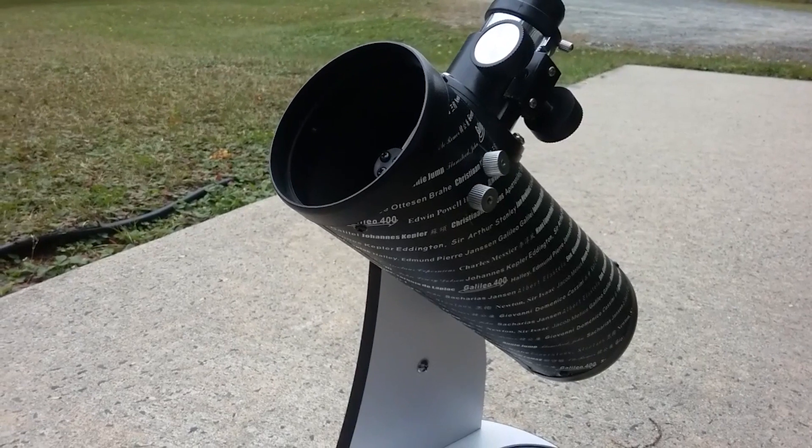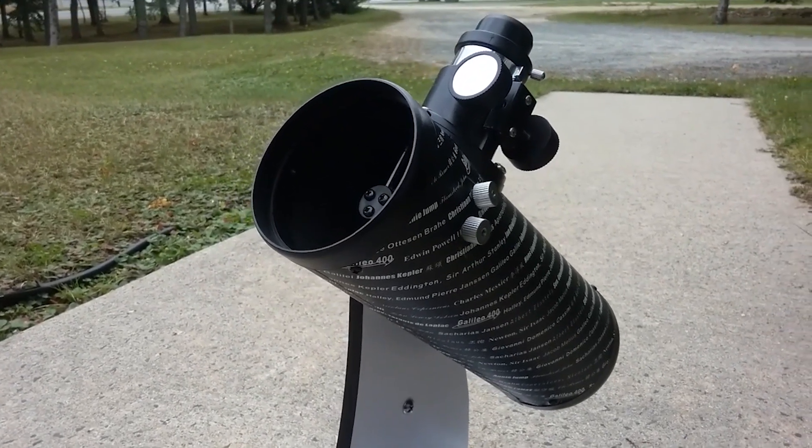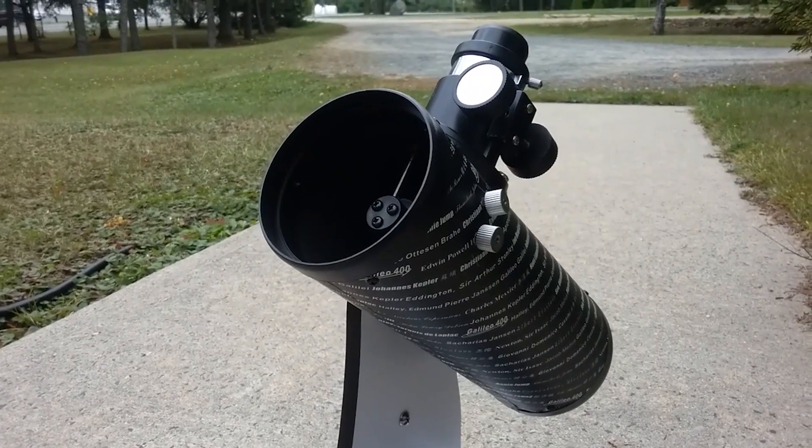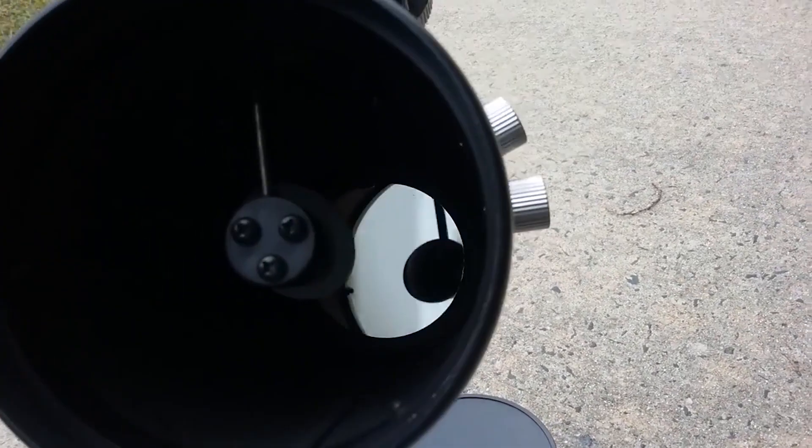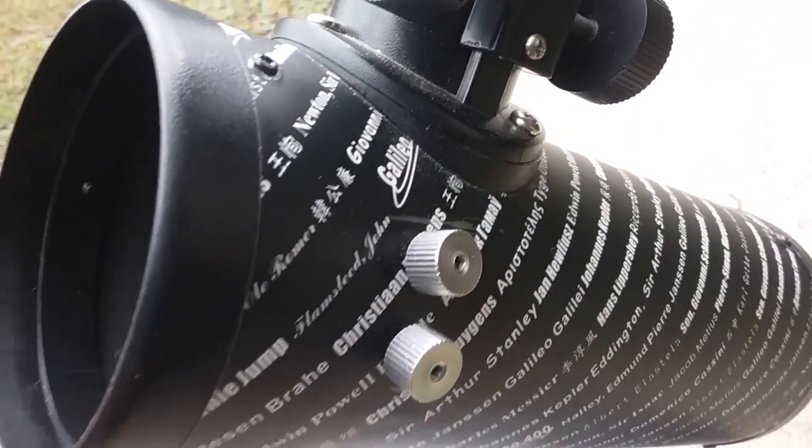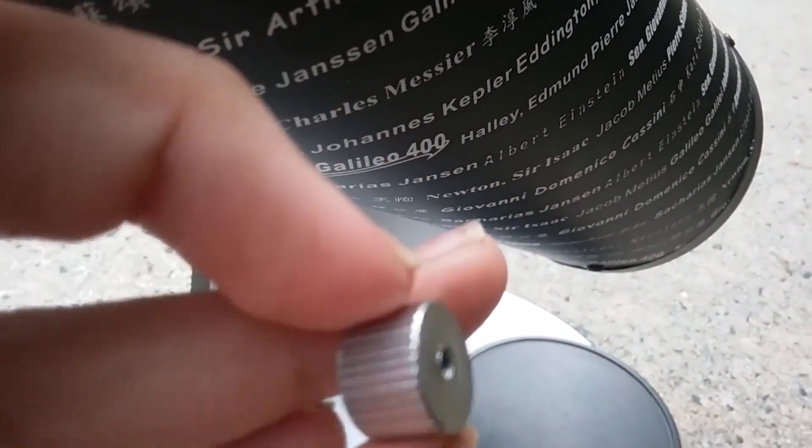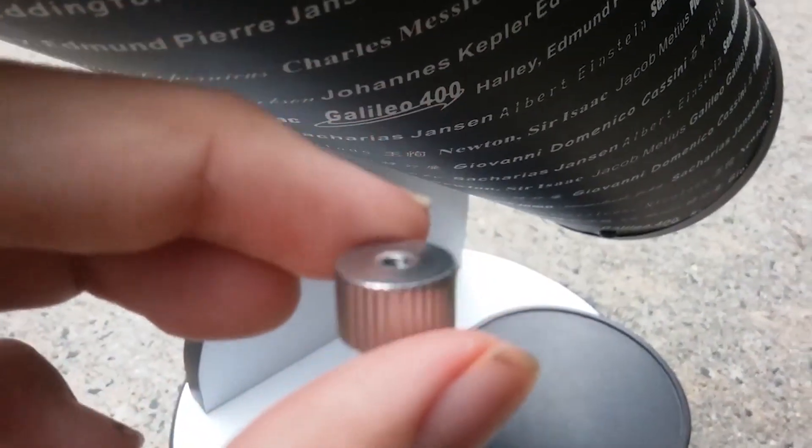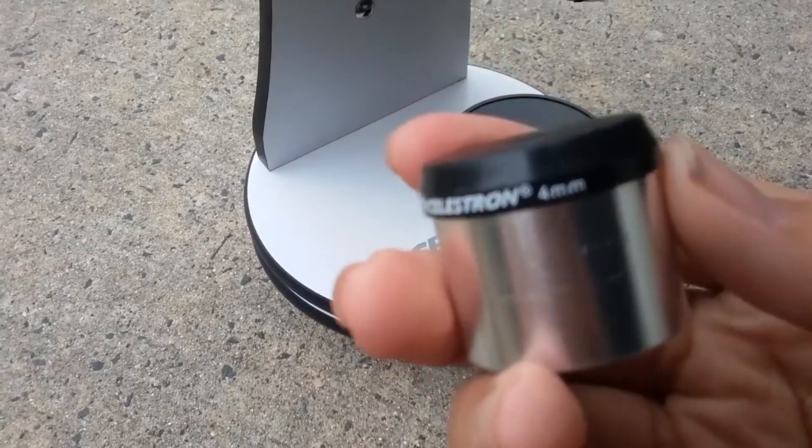The Celestron 21023 can be set up without tools, and it comes with two Kellner eyepieces. An additional selling point for this telescope is the included finderscope, which is a great accessory for beginners. This telescope is designed with a 76mm aperture, and it features a Dobsonian style. The Celestron 21023 is an upgraded version of the original first scope, and with a weight of only four pounds, it can be transported and used almost anywhere.